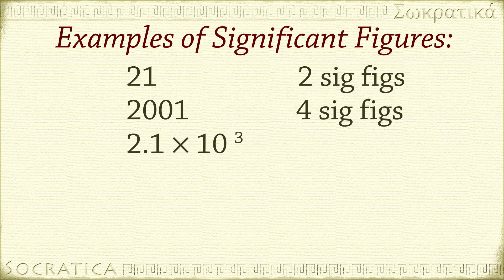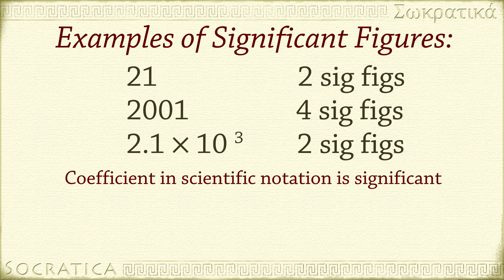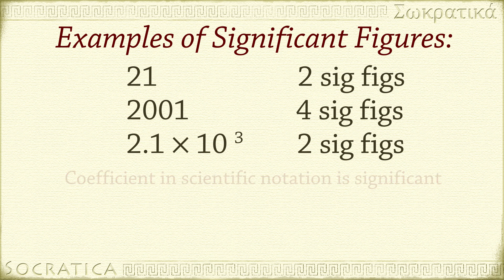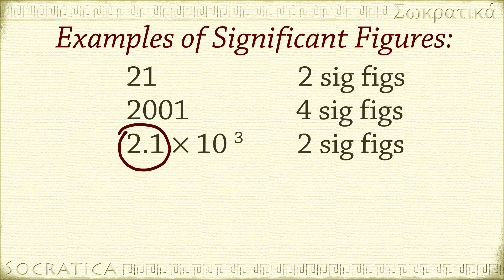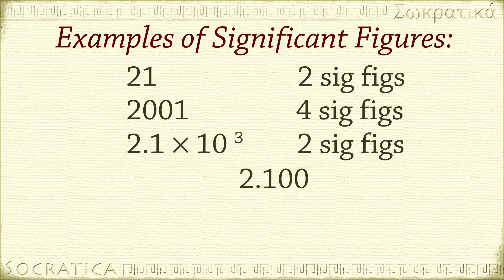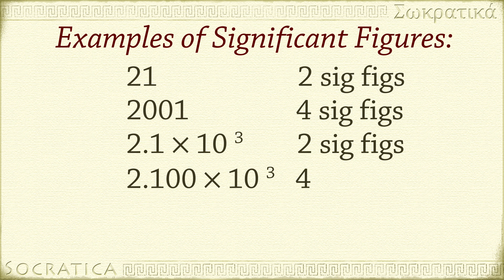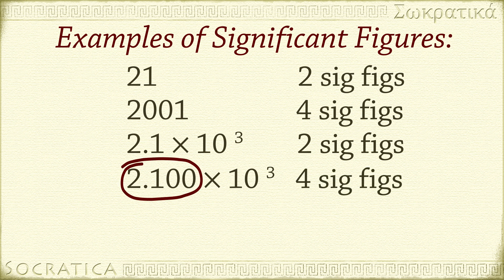2.1 × 10³ has 2 sig figs. In scientific notation, the digits of the coefficient on the left are significant. Here's a piece of trivia: this part of the number is called the significand, and it's significant. 2.100 × 10³ has 4 sig figs — again, in scientific notation, all the digits of the coefficient on the left are significant.